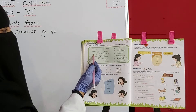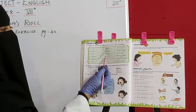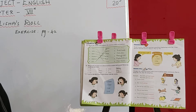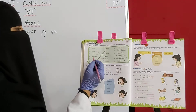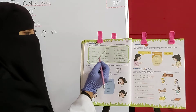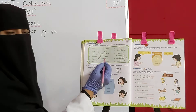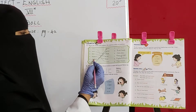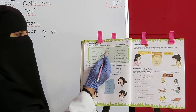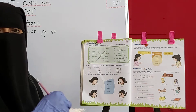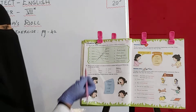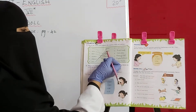Next one: Fish — fins. Fish ke kya hoti hai? Fins hoti hai. Jo par hote hain fish ke, unko bolte hain fins. Then monkeys — tail. Monkey ki tail hoti hai. Elephants — trunk hoti hai. Elephant ki jo sund hoti hai, usko kya bolte hain? Trunk bolte hain. Elephants — trunk.